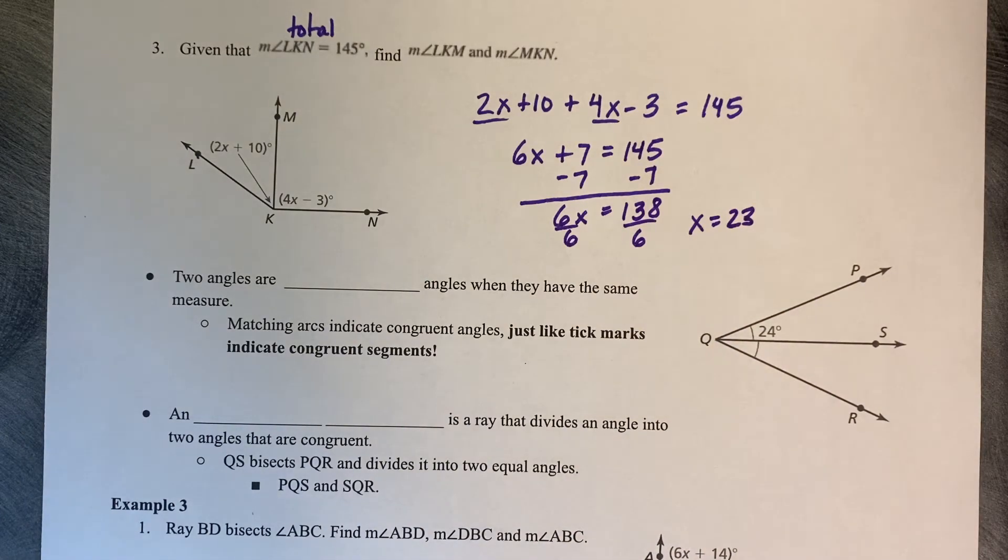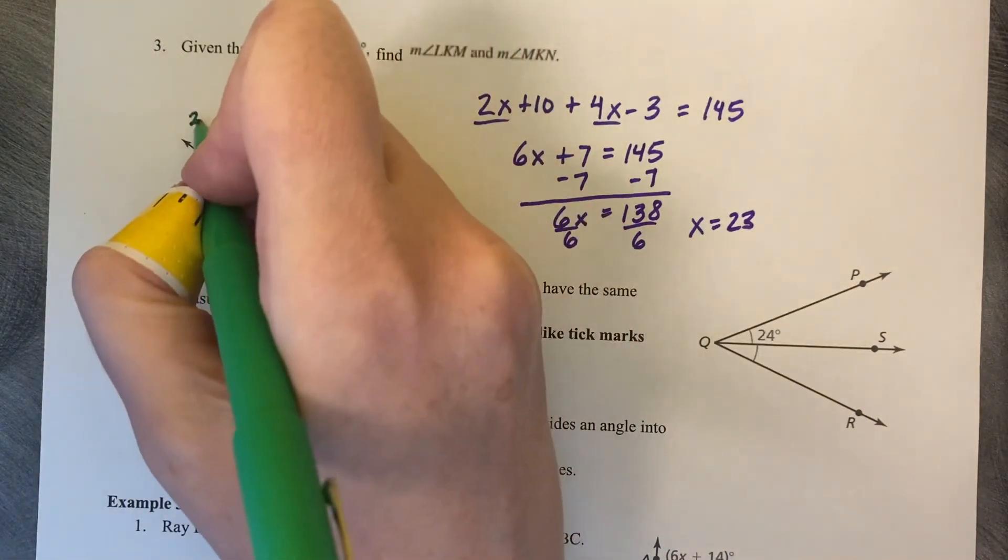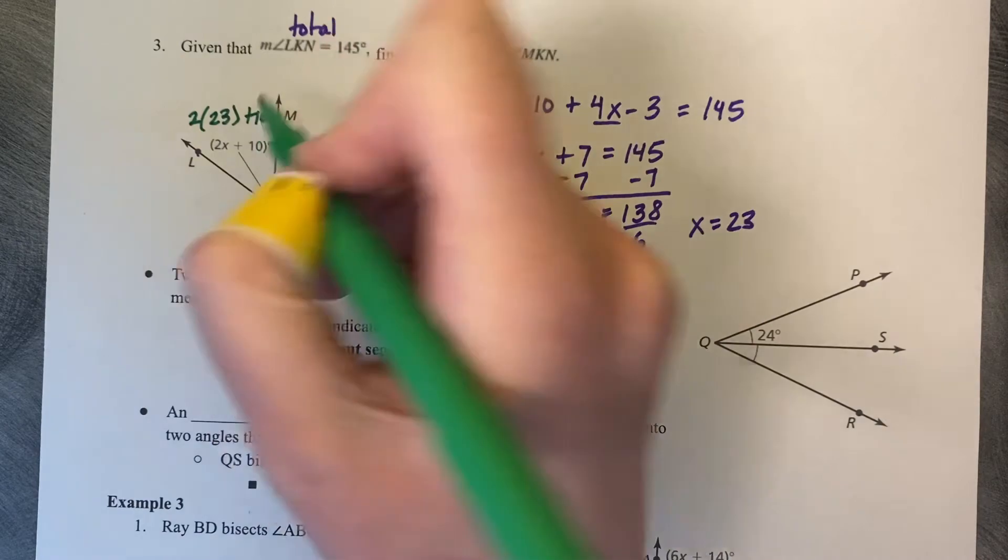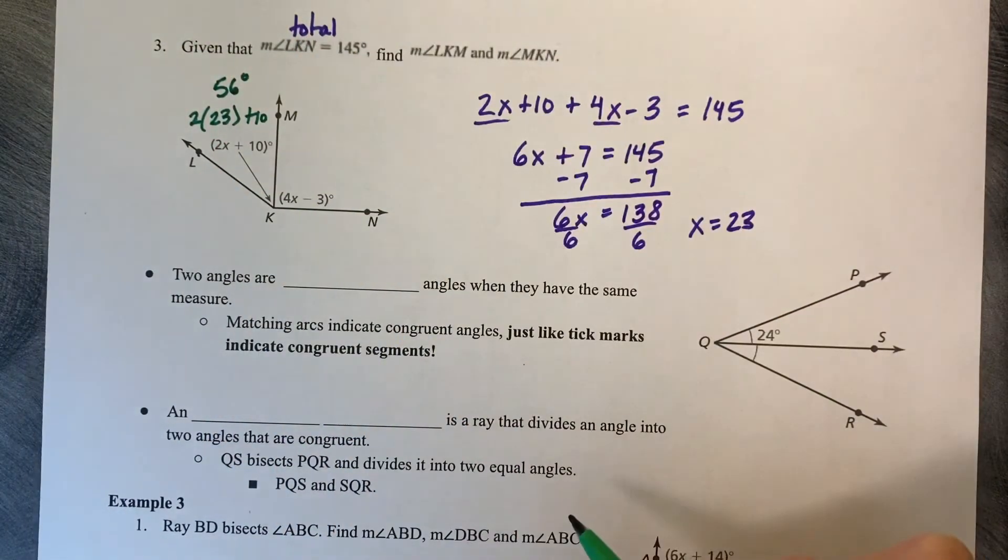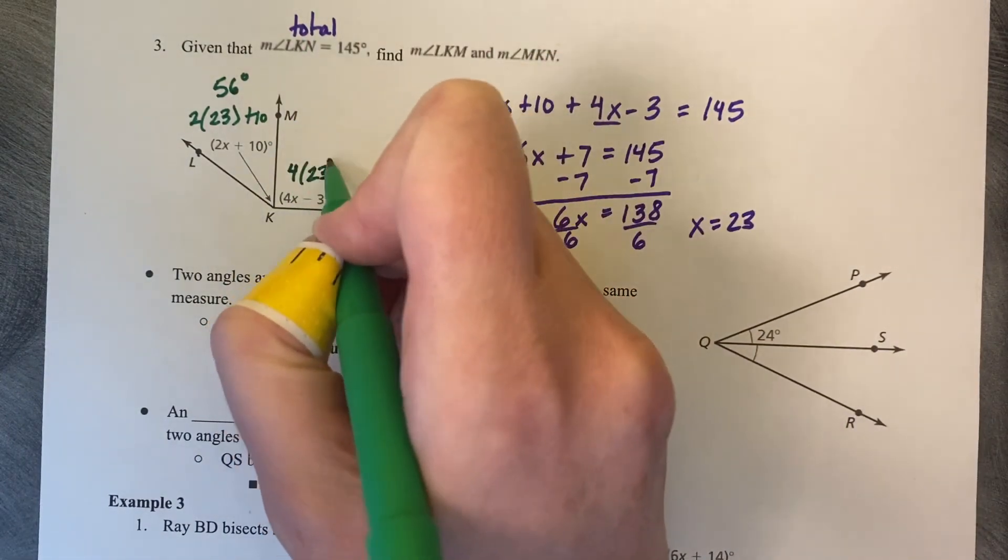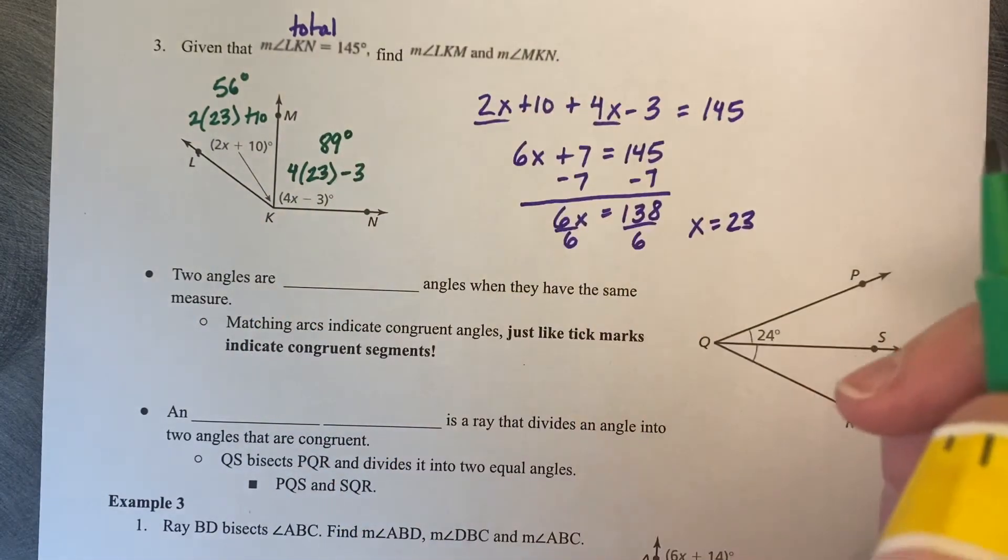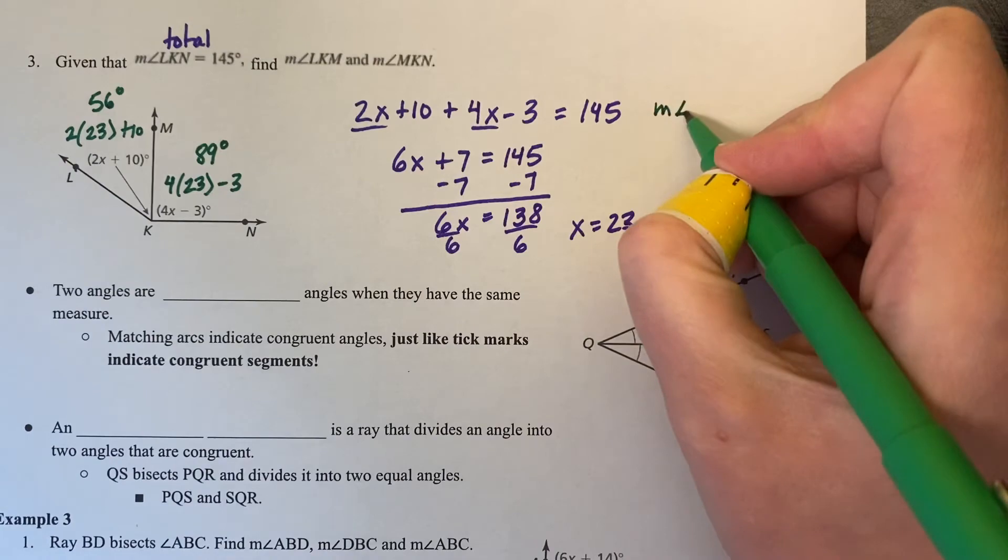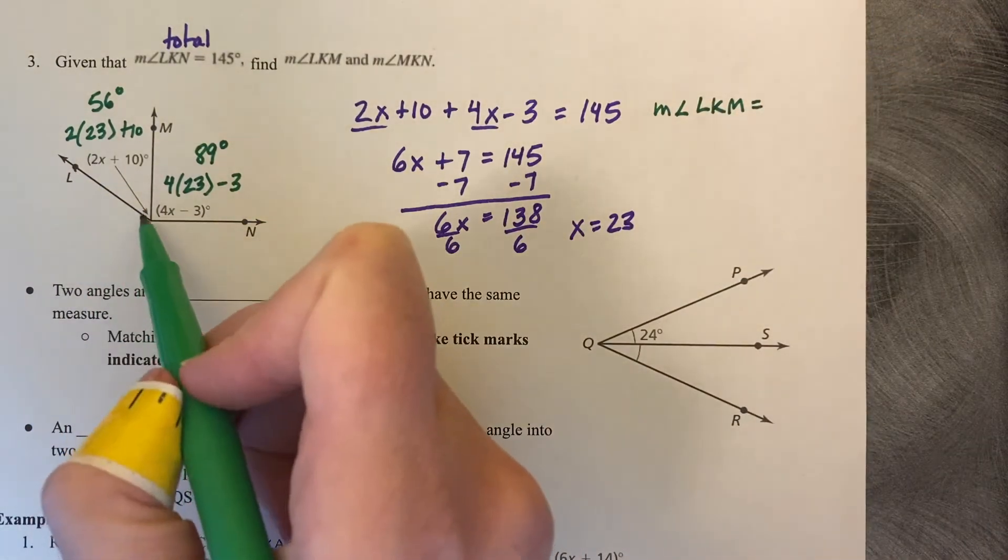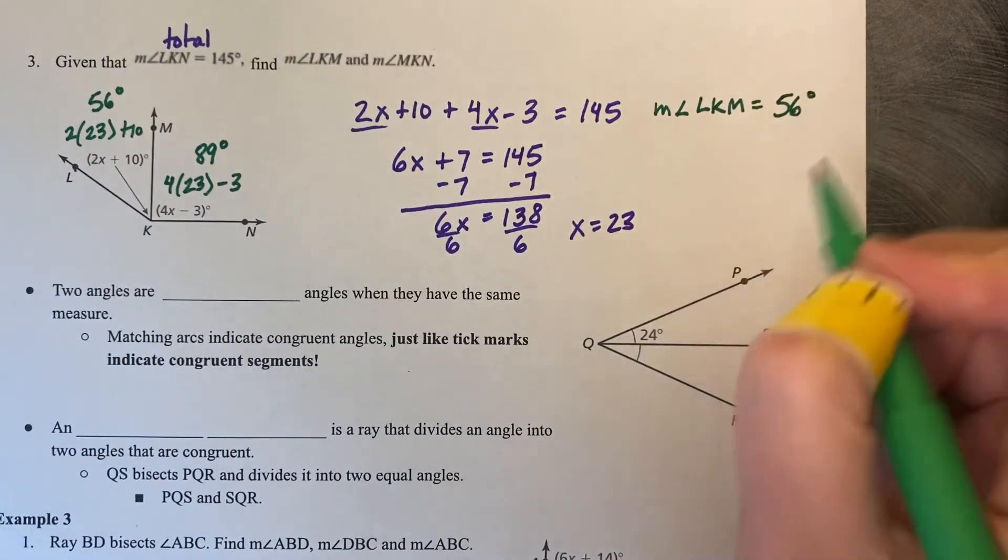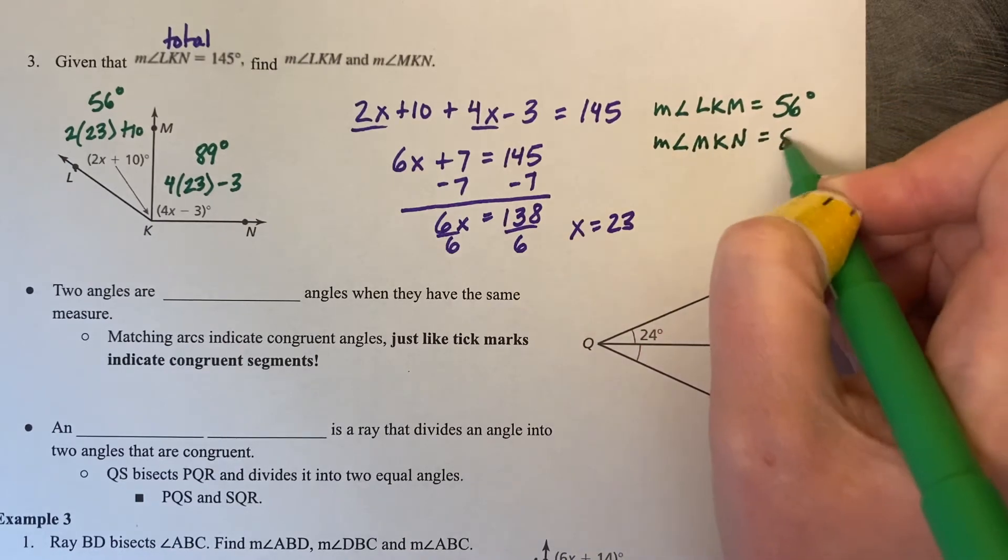We're not quite done though. We need to take that 23 and substitute it back into each angle. 2 times 23 plus 10 is 56 degrees. 4 times 23 minus 3 is 89 degrees. So our final answer, the measure of LKM is 56 degrees, and the measure of MKN is 89 degrees.